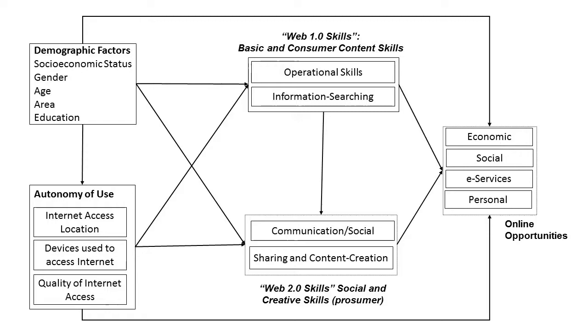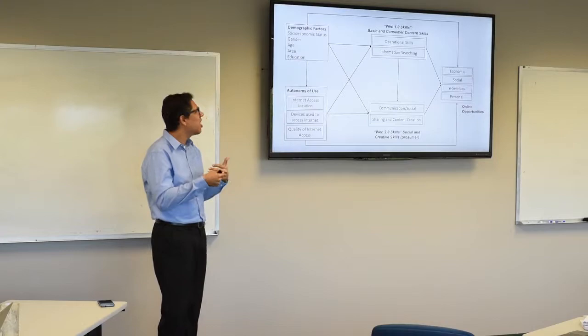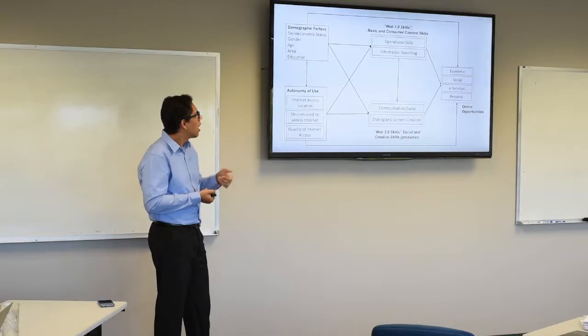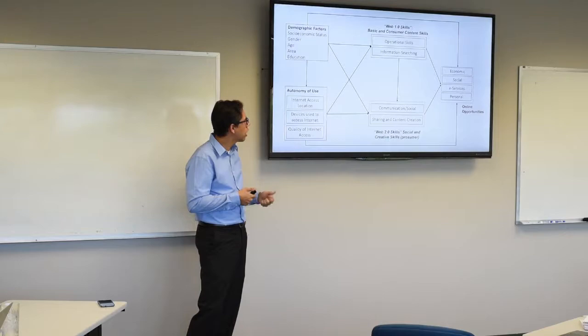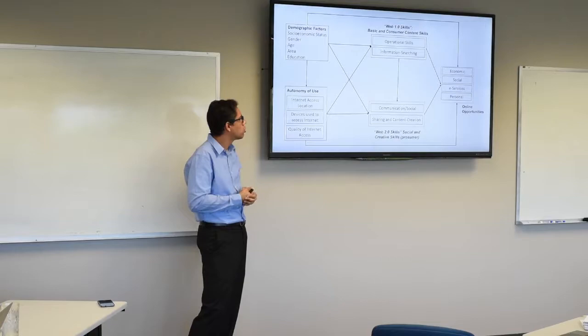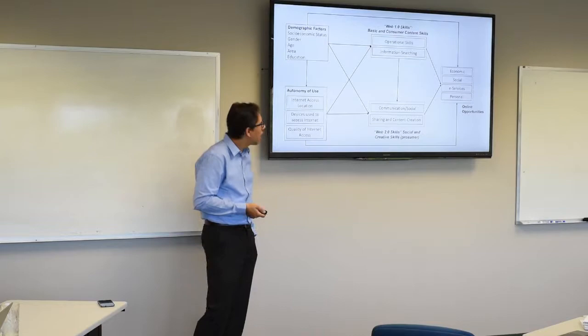The second part in the model, I try to consider the variety of internet skills. The first I call here Web 1.0 skills, so basically operational skills. The idea of these skills is technical skills when you talk about operational, but not computer skills. Technical skills to use the internet independent of the device you use. Information search, or information skills, ability to select, to find information according to what you want. And here, we have the most sophisticated internet skills related, for example, ability to communicate and interact on the internet, communication and social skills. And content creation, your ability to get information from different sources and create new content and publish on the internet.